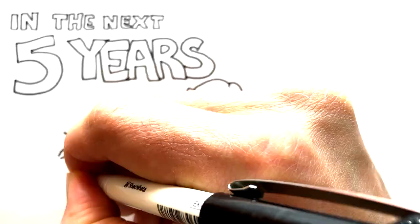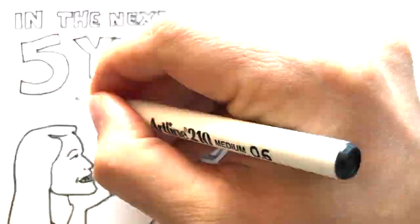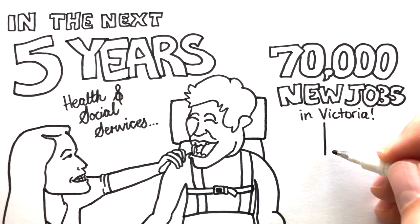Over the next five years, the health and social assistance industry will be the fastest growing industry in the state, adding around 70,000 new jobs to the Victorian economy.